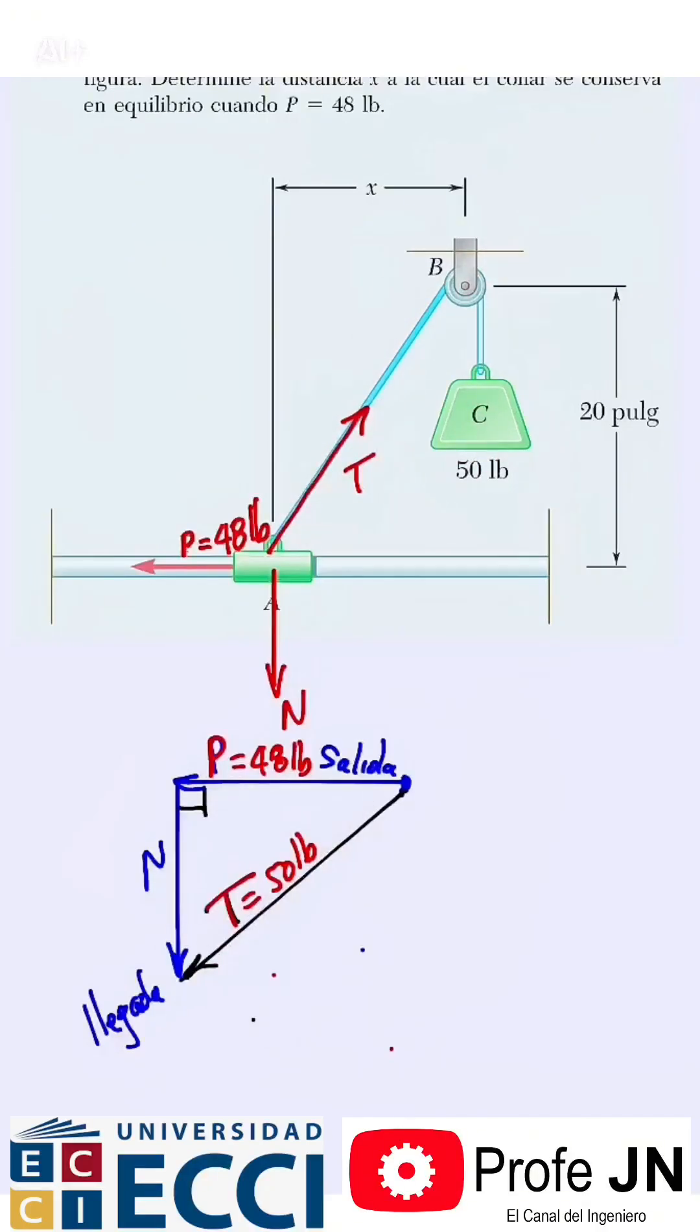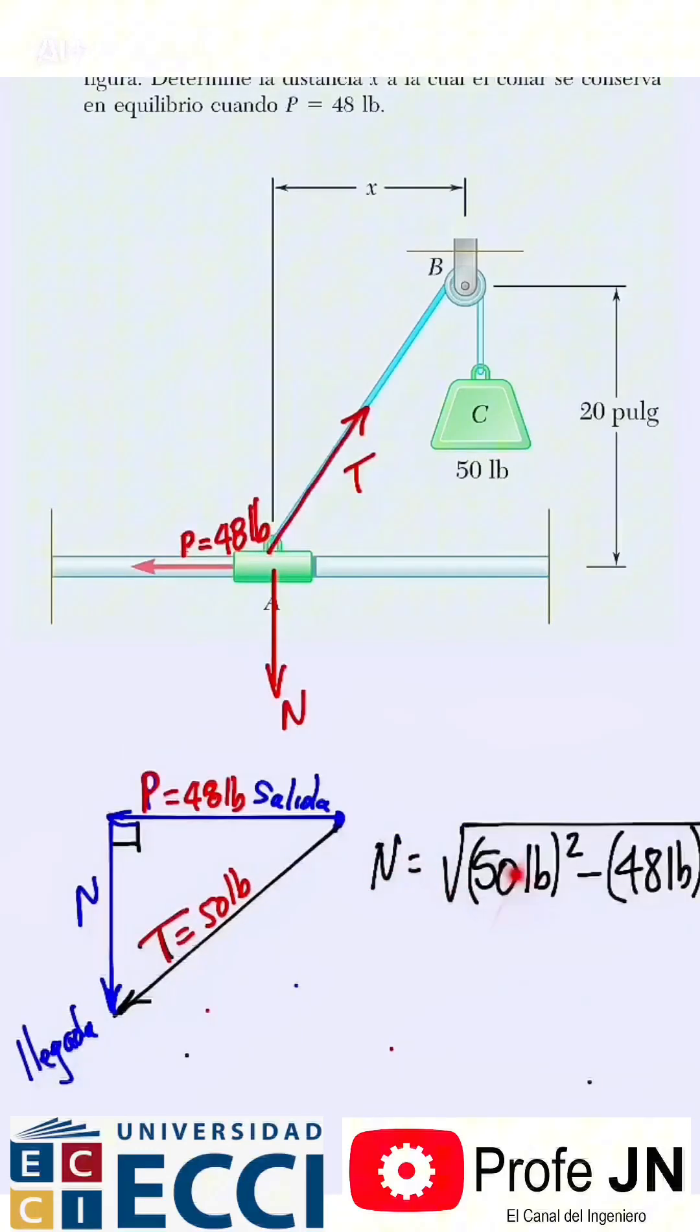I know two sides and the triangle is a right triangle, and I need to find one side. Remember that the leg is calculated as the square root of the hypotenuse squared minus the known leg squared. This is Pythagoras. And from here we solve—it gives us 14 pounds. We already have the other leg, but now how are we going to find X?